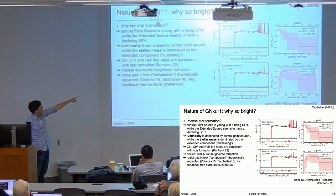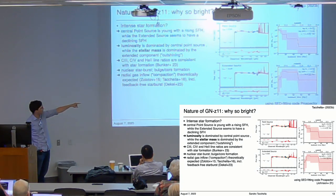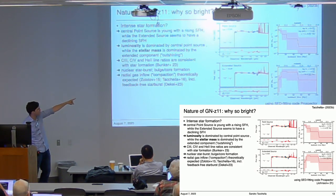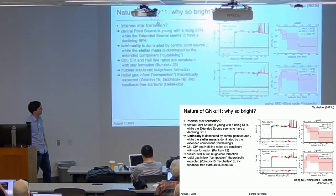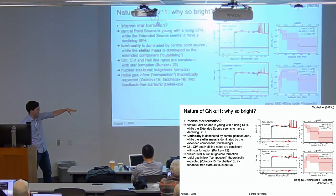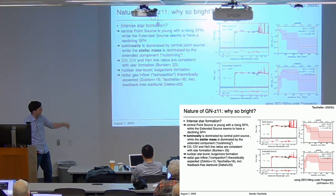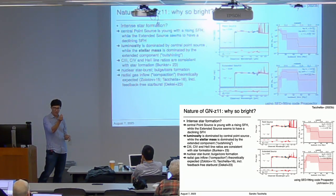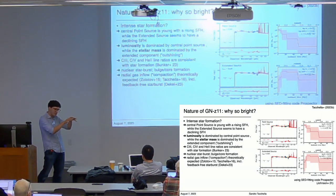Using SED modeling from the NIRSpec spectrum, the point source is consistent with a rising star formation history, a rather young stellar population, and a stellar mass of about 10^8.4 solar masses. The extended component is slightly older, has a constant or slightly decreasing star formation history, and a stellar mass of about 10^8.9 solar masses. The luminosity is dominated by the point source—about three times more light—but the stellar mass is dominated by the extended component.